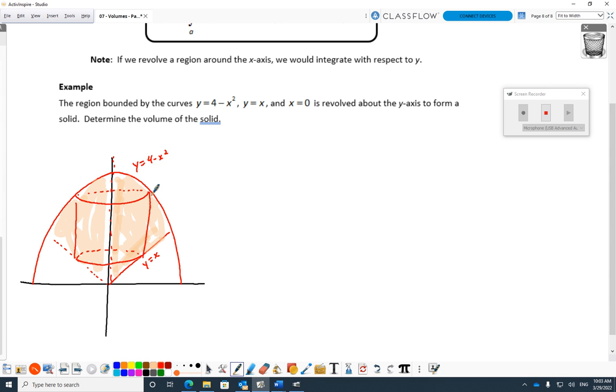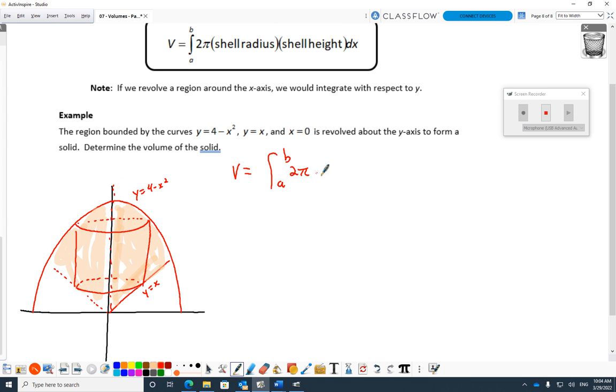So my volume is integral from A to B. Let me just copy it straight up above. 2 pi, shell radius, shell height, dx. Little problem right off the hop. To get the dx, I need to know that X value right there, the edge of the shape there. And so I'm stuck with solving this equation: 4 minus X squared equal to X. I've got to find out when do these two curves bang into each other.